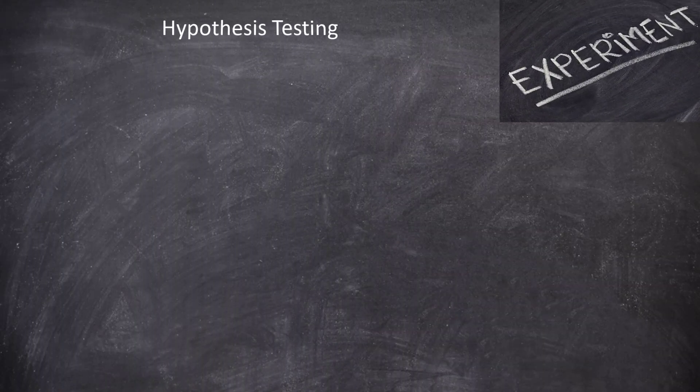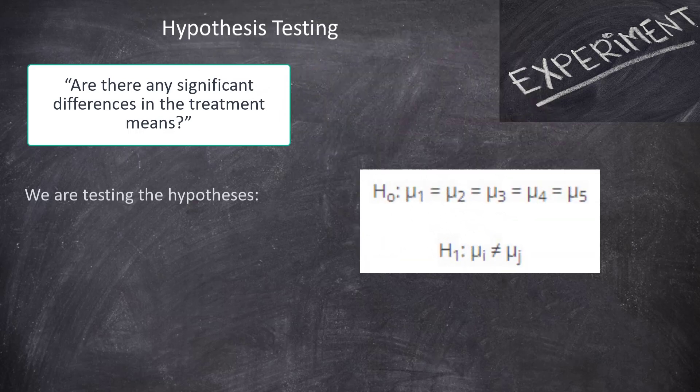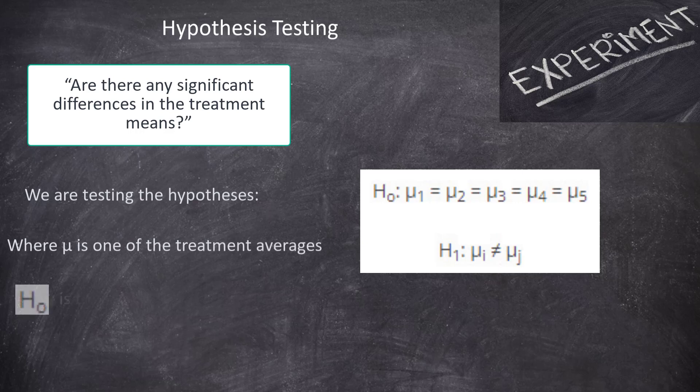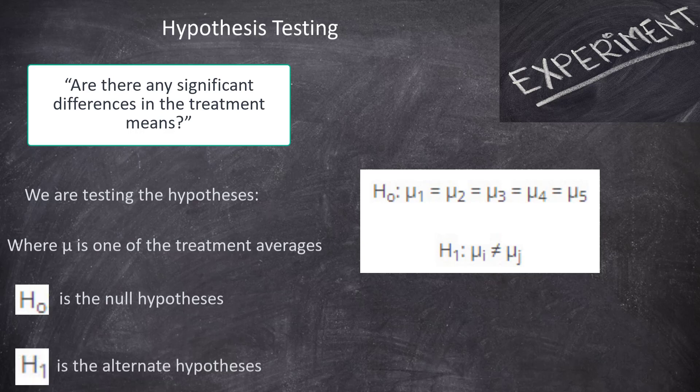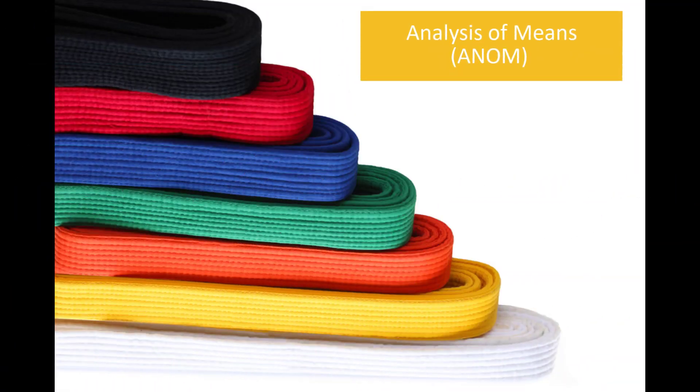What hypothesis are we looking at? What we're trying to say is, are there any significant difference in the treatment means? The table shows there are differences, but are they significant? We're testing the hypothesis. The null hypothesis is that the means are all equal. Each one has the same average. The alternate hypothesis is that at least one of the treatment means is different than the others. So that's what we're trying to find out. Are there any significant differences?